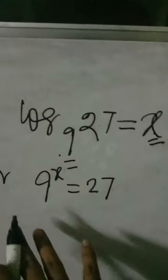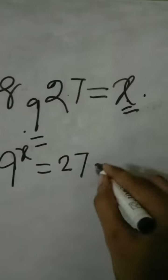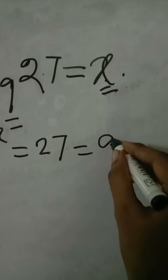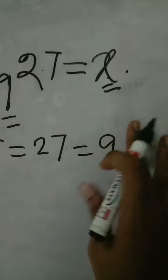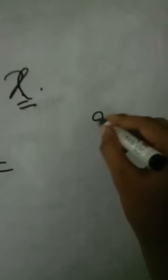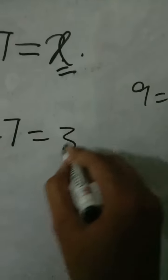So we know 9, you can write down the number as 9 is same as 3 squared, right? So you can write 3 squared, and that whole thing to the power x.